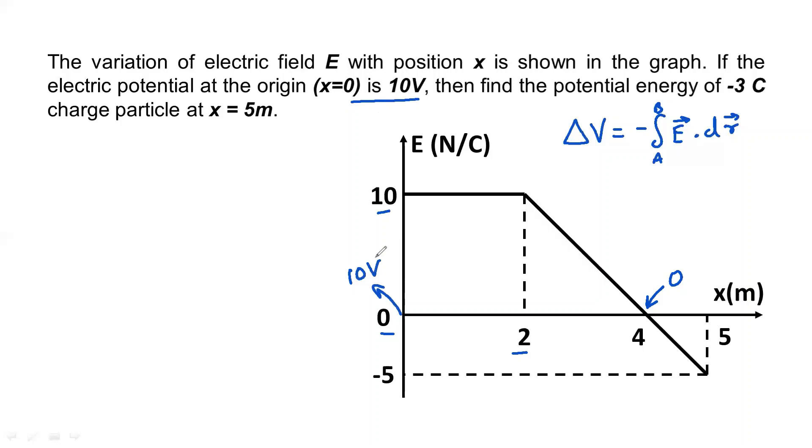...then find the potential energy of a minus 3 coulomb charge particle at x equals 5 meters. Now here is the thing: calculate voltage, and if we have voltage calculated, energy would simply be charge into voltage.